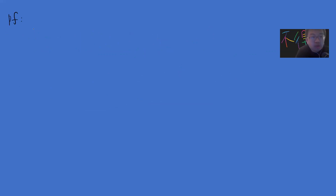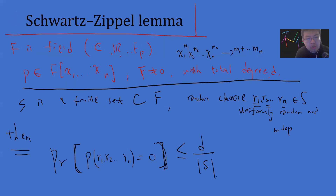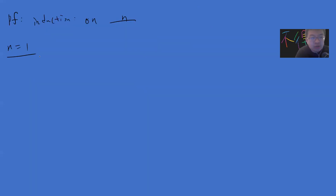The proof is also simple. We use induction on n. For the base case n = 1, what we're saying is that this is a single-variable polynomial. So the probability that P(r) = 0 is at most d divided by |S|.